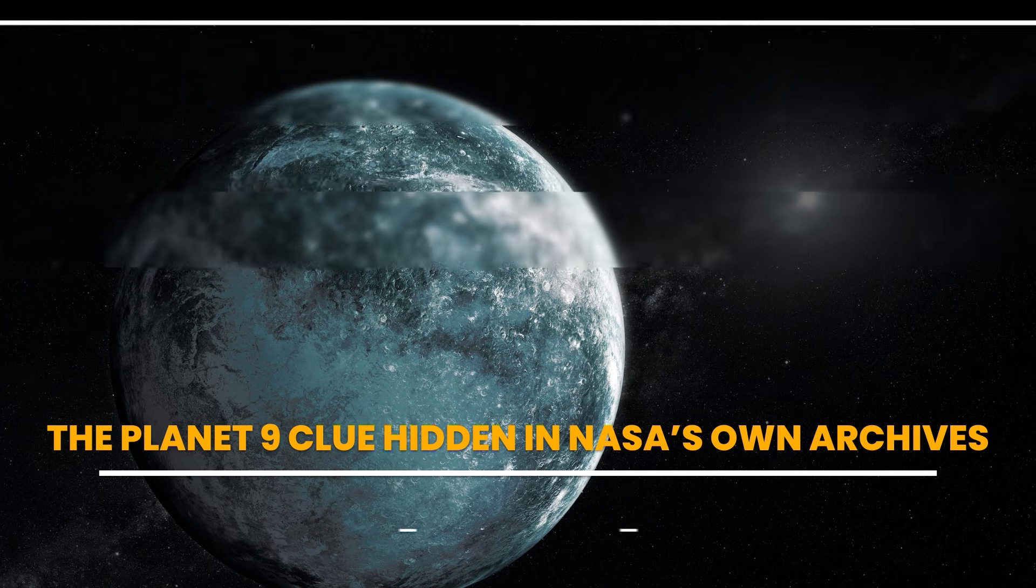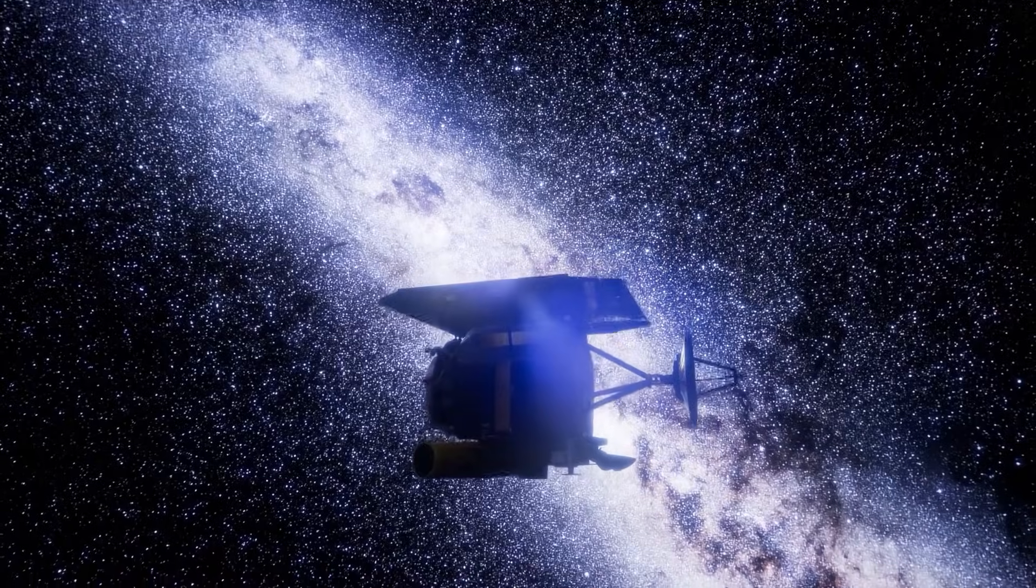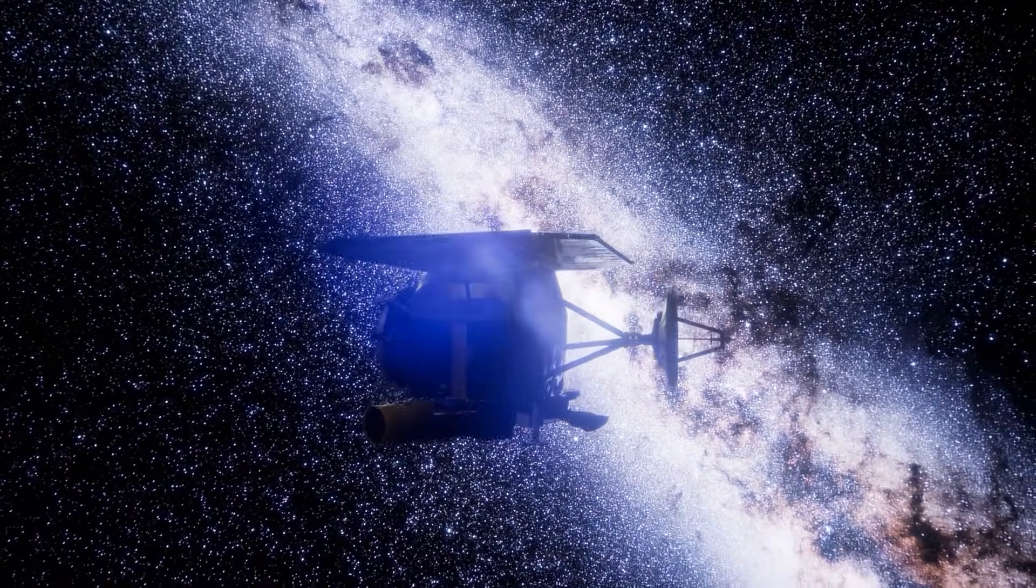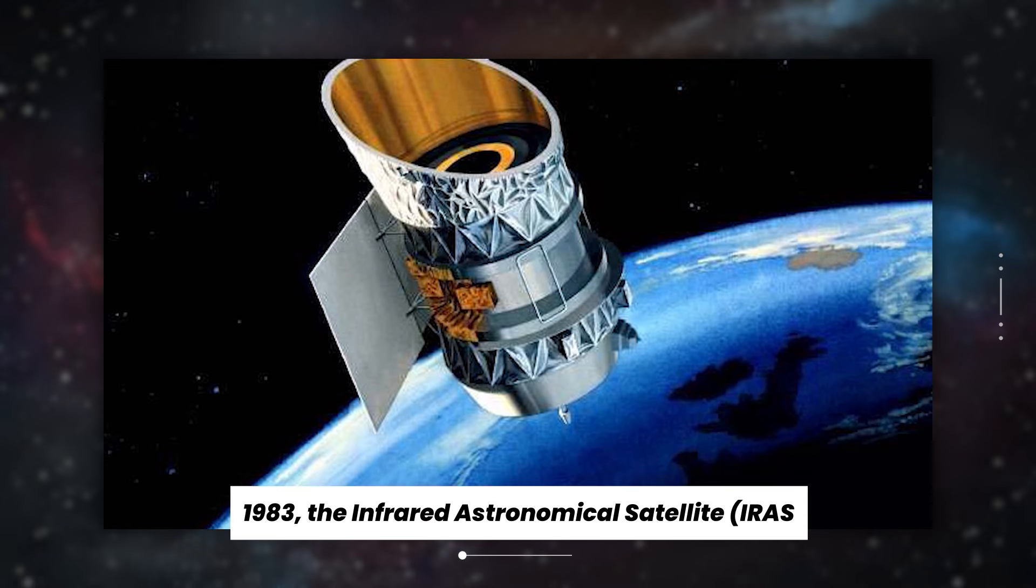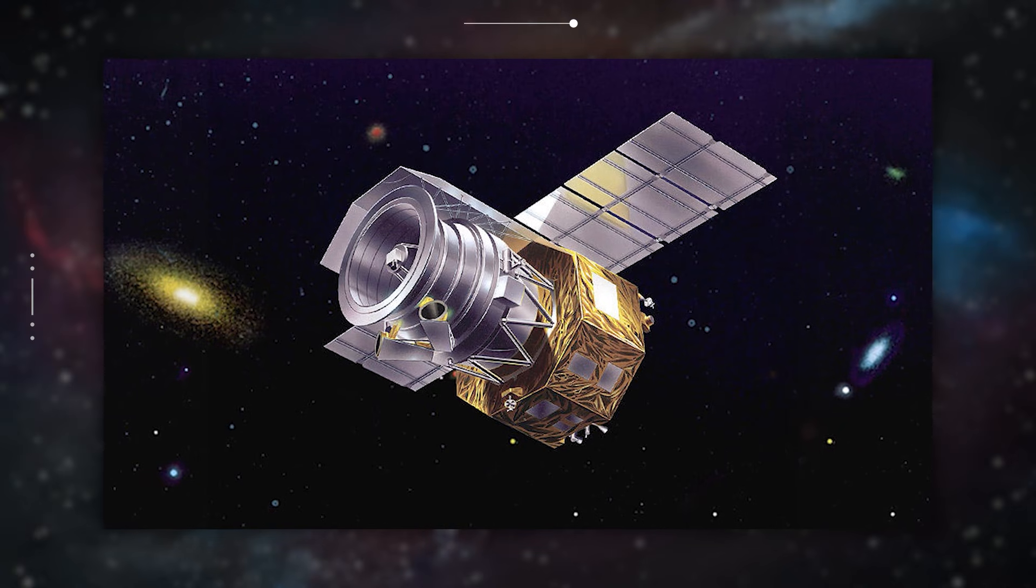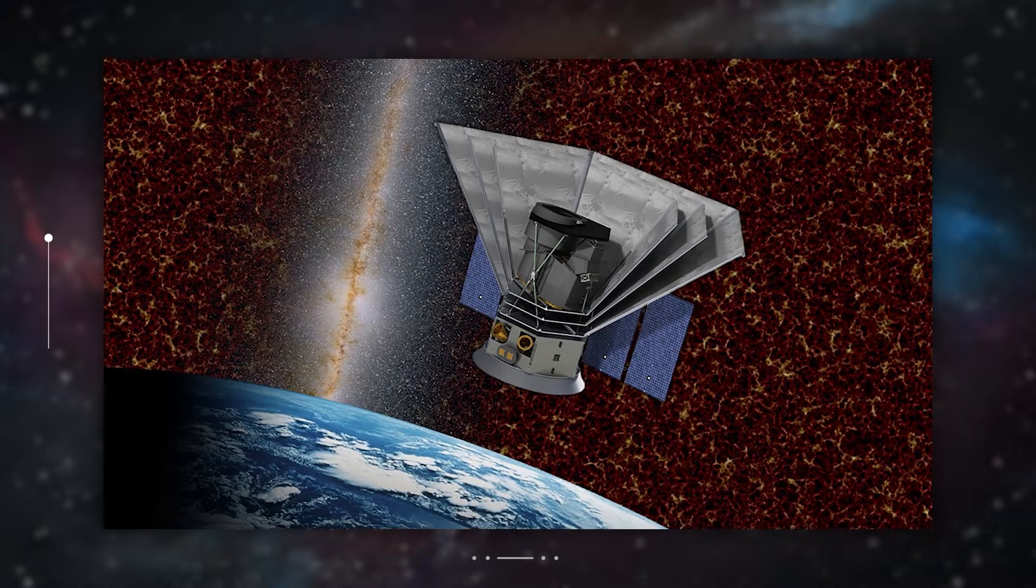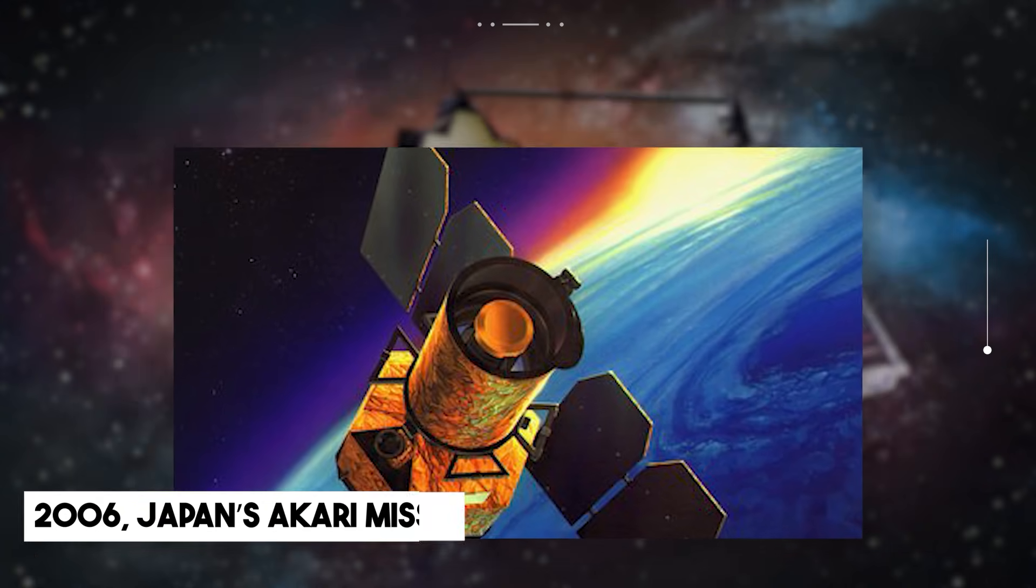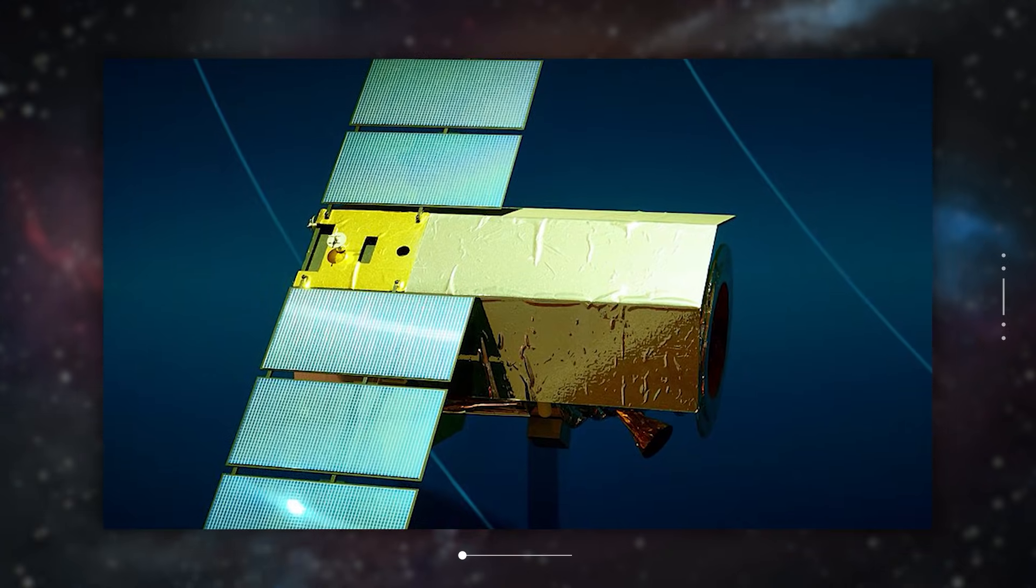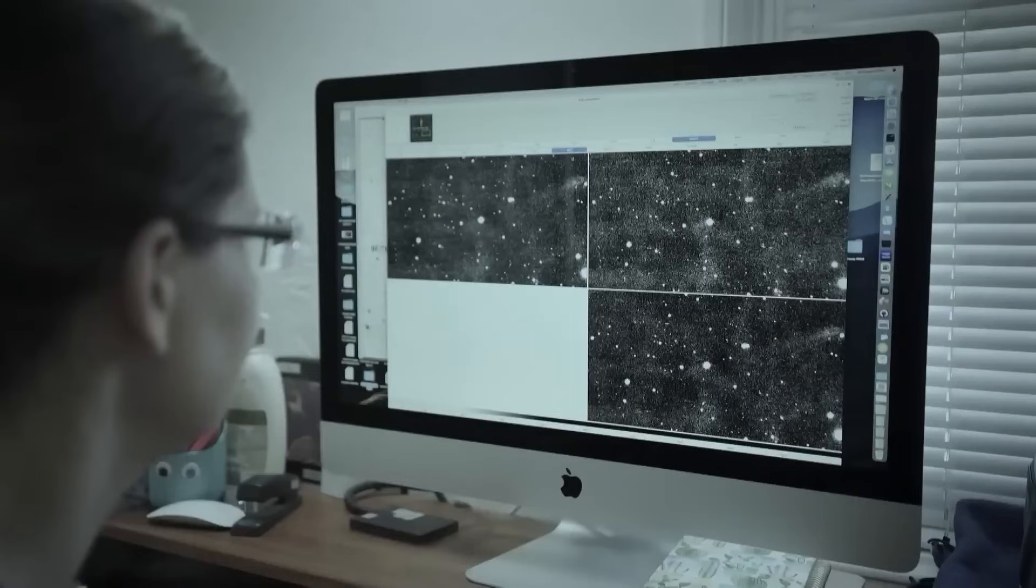No new rocket was launched. No new telescope turned its lens to the stars. Instead, the clue came from something NASA already had. Back in 1983, the Infrared Astronomical Satellite, IRAS, scanned the entire sky in infrared wavelengths, capturing heat signatures from cold, distant objects the human eye could never see. Then, in 2006, Japan's AKARI mission did the same, this time with improved resolution and sensitivity.